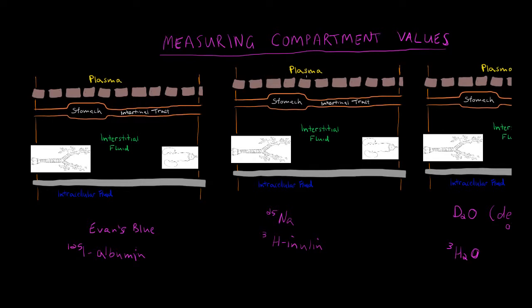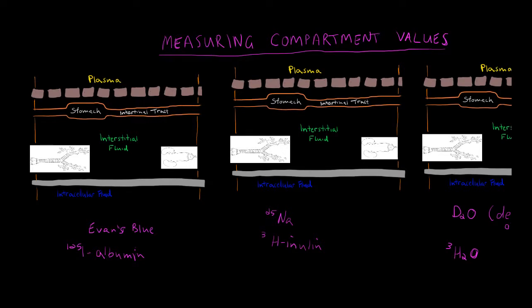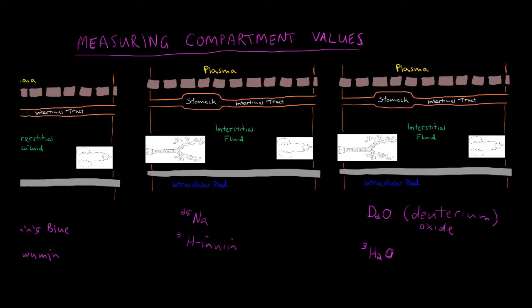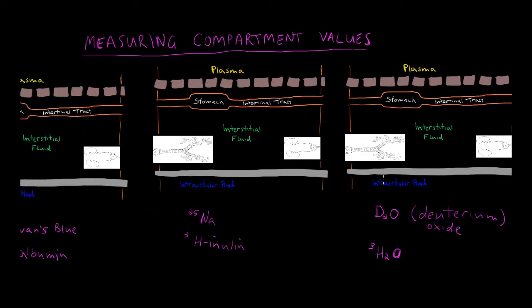If an indicator leaks out from the plasma — we inject it into our blood vessel and it leaks out into the interstitial fluid — then we can measure our extracellular fluid, because plasma plus interstitial fluid equals extracellular fluid. And if it leaks all the way down inside your cells, that measures your total body fluids.